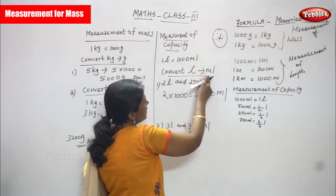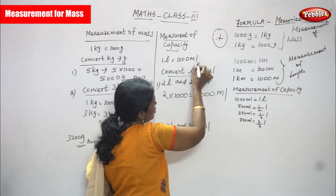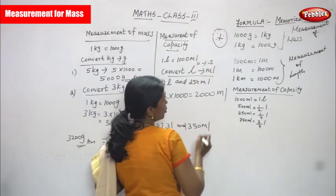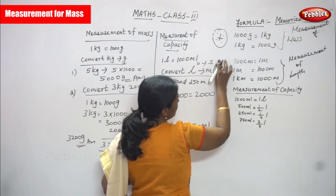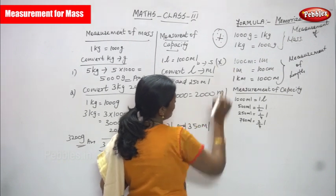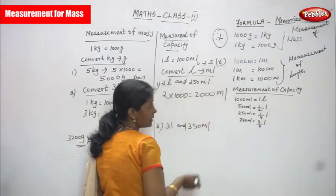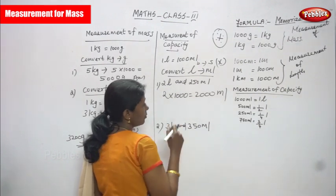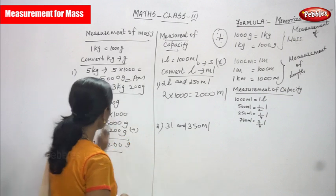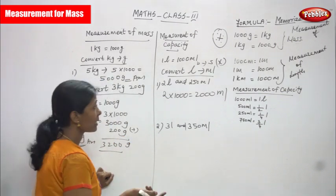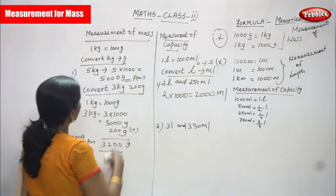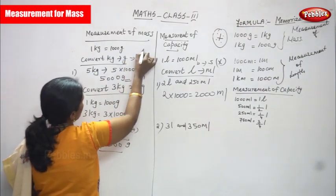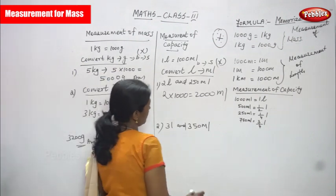Liter is the bigger unit and milliliter is the smaller unit. Bigger to smaller means you multiply. This rule applies to meter to centimeter — also bigger to smaller, so multiply. And kilogram to gram — that is also bigger to smaller unit, so you use the multiplication symbol.